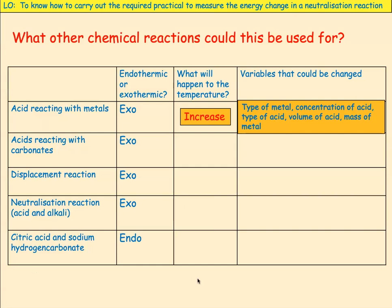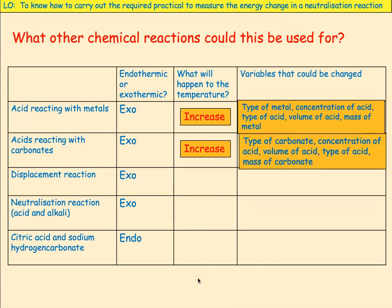You could do an acid reacting with a carbonate — again exothermic, so you'd get an increase. You could change the type of carbonate (copper carbonate, calcium carbonate, etc.), the concentration of acid, the volume of acid, the type of acid, or the mass of carbonate — any of those could be investigated.